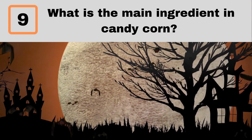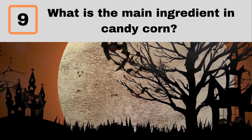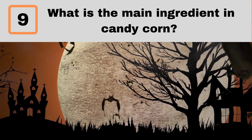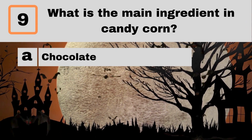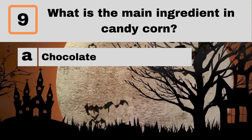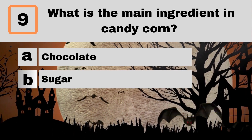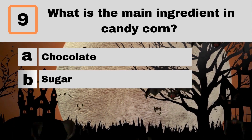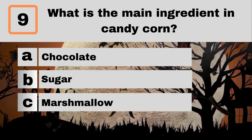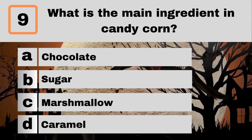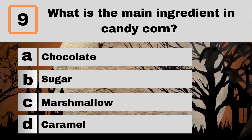Question 9. What is the main ingredient in candy corn? A. Chocolate. B. Sugar. C. Marshmallow. D. Caramel.